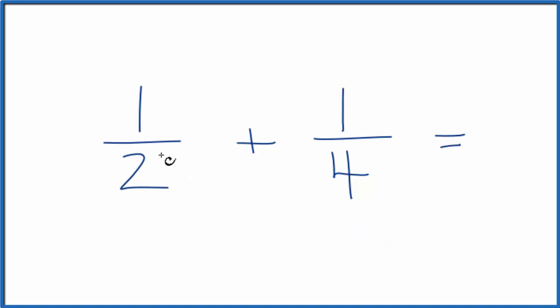So first off, we need to get the same denominator, the number on the bottom. We could do that, if you think about it, if we just doubled one-half. We doubled two, that's four. That would give us the same denominator.